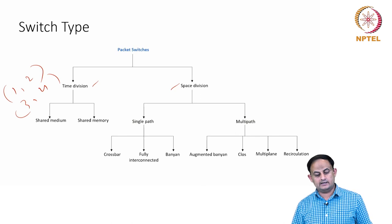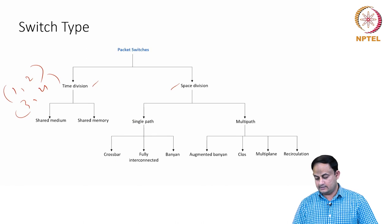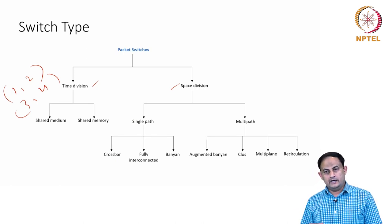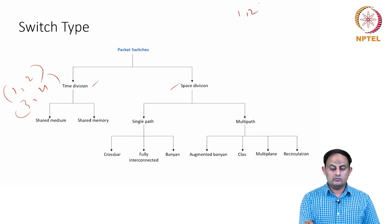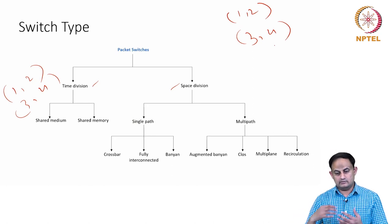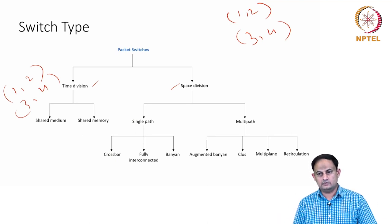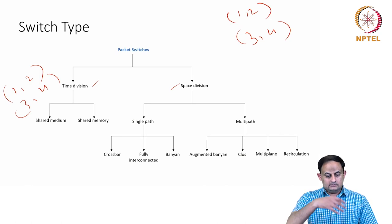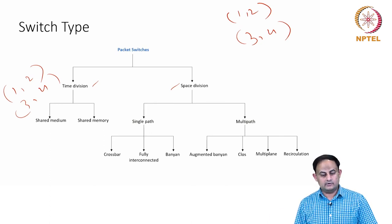The second category is called space division switch fabrics, where multiple parallel connections are possible. In this case, ports 1 and 2 can talk while ports 3 and 4 can also talk simultaneously — these are parallel forwardings that the switch fabric is doing. Both time division and space division have multiple strategies within them.